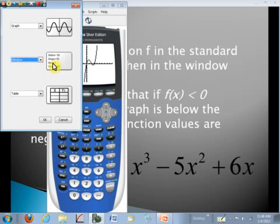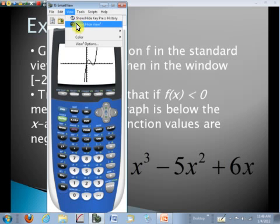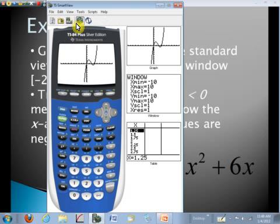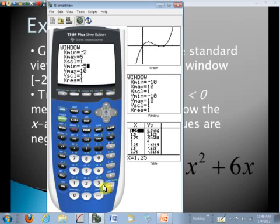Now notice here if we go to show and hide view cubed, we get those three screens up here now. Now let's go ahead and change our viewing window. And those values were negative 2 to 5. We'll leave the scale marks at 1 and then negative 5 to 5. And let's go ahead and hit graph now. And notice those get updated at the same time. So we can kind of see the viewing window and the graph at the same time now.